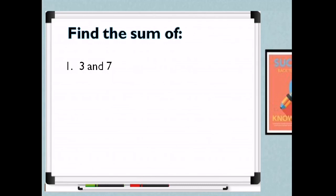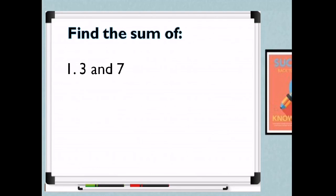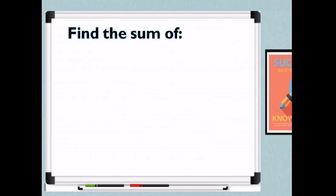Let's have examples. Find the sum of: 1) 3 and 7; 2) 16 and 59; 3) negative 4 and 9; 4) 73 and negative 90; and 5) negative 4 and negative 3. For number 1, we just add both positive numbers: 3 plus 7 equals 10. For number 2, 16 plus 59 equals positive 75.